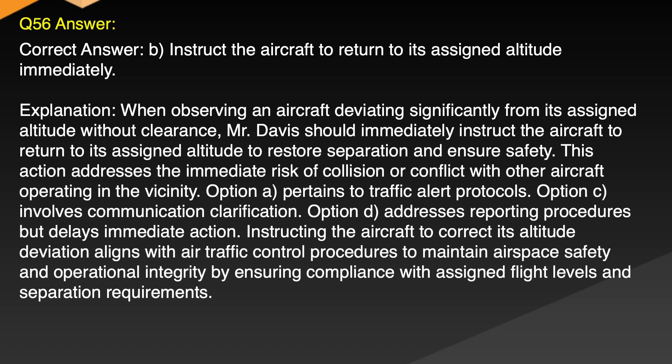Explanation: When observing an aircraft deviating significantly from its assigned altitude without clearance, Mr. Davis should immediately instruct the aircraft to return to its assigned altitude to restore separation and ensure safety. This action addresses the immediate risk of collision or conflict with other aircraft operating in the vicinity. Option A pertains to traffic alert protocols. Option C involves communication clarification. Option D addresses reporting procedures but delays immediate action. Instructing the aircraft to correct its altitude deviation aligns with air traffic control procedures to maintain airspace safety and operational integrity by ensuring compliance with assigned flight levels and separation requirements.